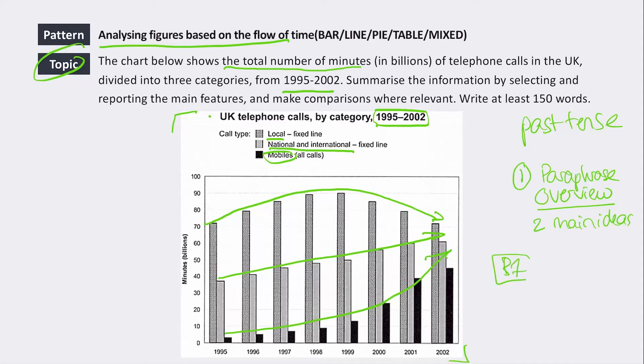And then in your first detail paragraph, you should give me your detail one, and then in the second one, detail two. Okay, so by looking at this, you need to think about how you want to divide up the information. So the main takeaway from this is that local calls have started to decline.